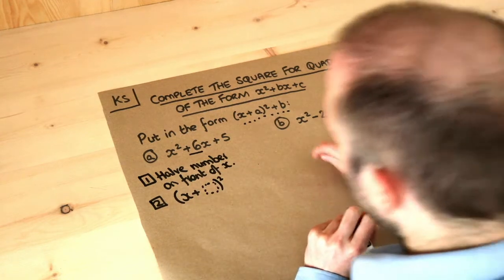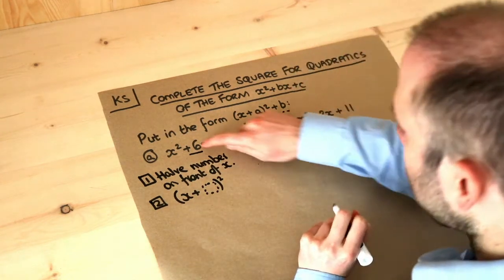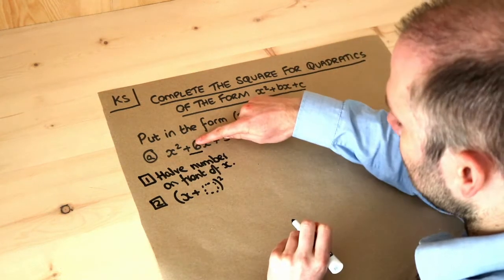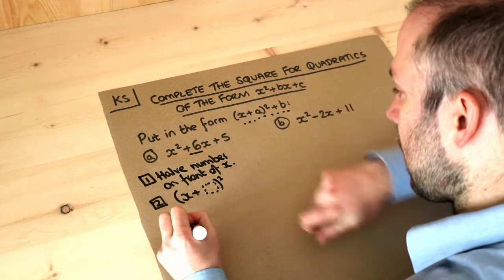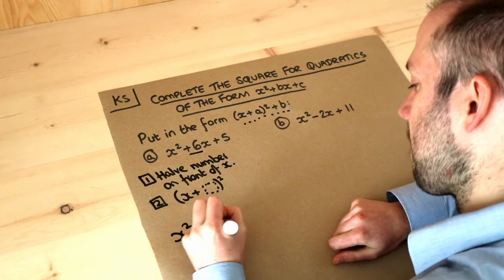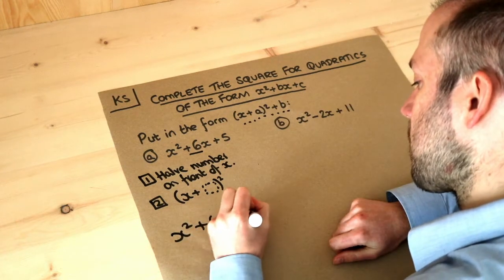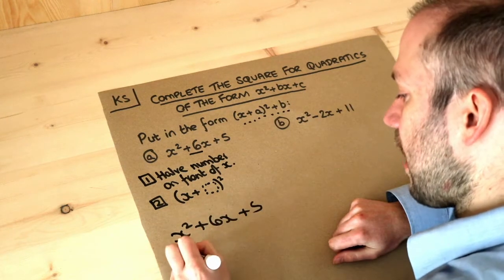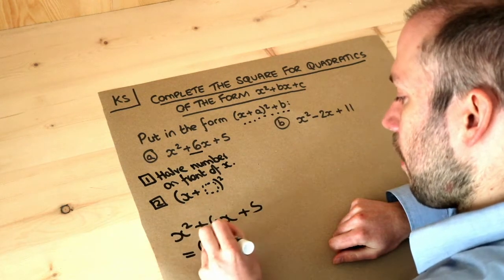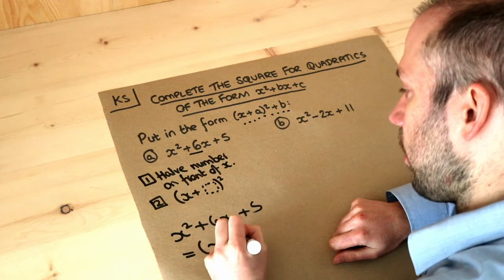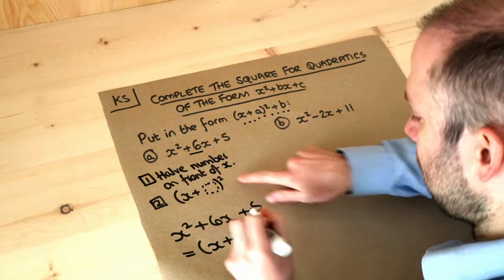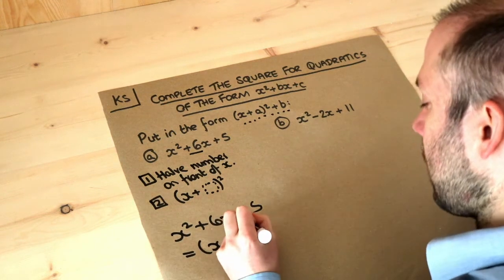So if I do that: half of six is three. So we're going to write this as x plus three — half that number — with the squared there.